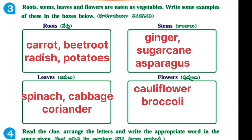Next, third one: roots, stems, leaves, and flowers are eaten as vegetables. Write some examples of these in the boxes below. Roots: carrot, beetroot, radish, potatoes. Stems: ginger, sugarcane, asparagus. Leaves: spinach, cabbage, coriander. Flowers: cauliflower and broccoli.